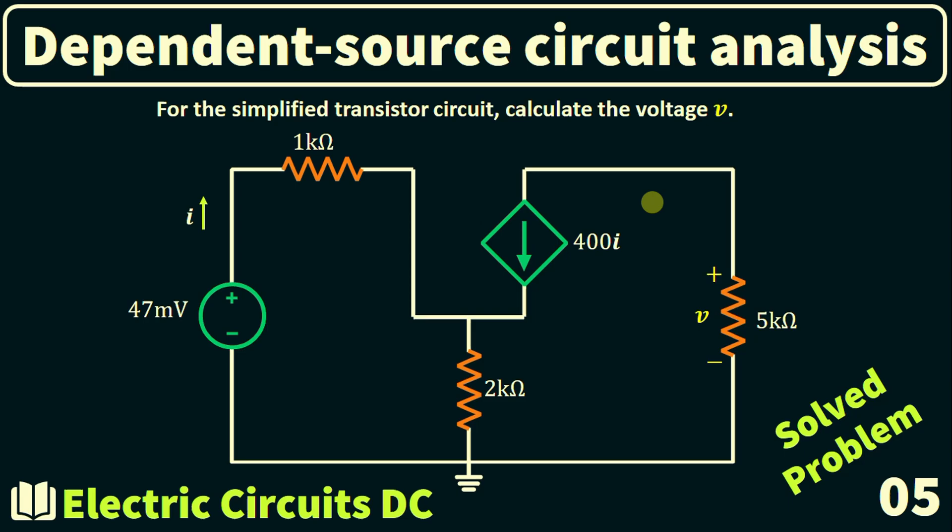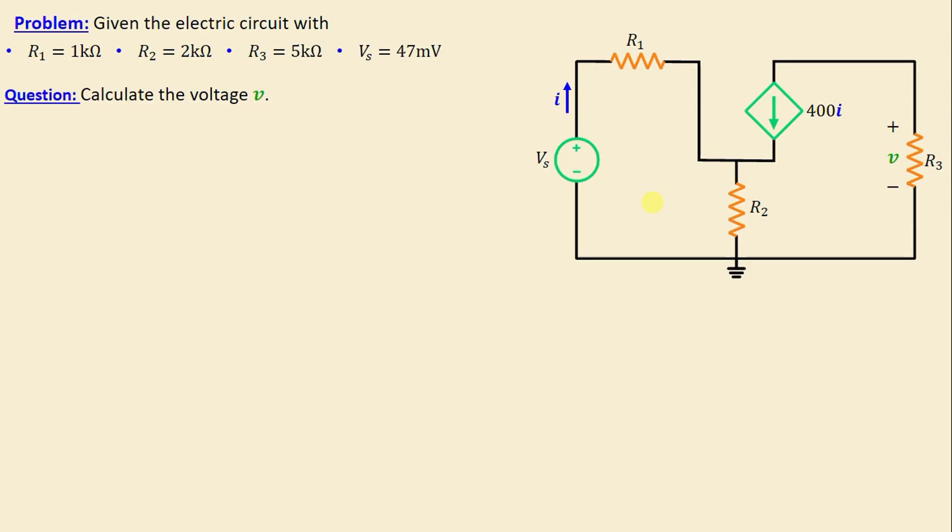Greetings, welcome to this new video about dependent source circuits analysis. Let's solve problem number five. Consider this network that presents a simplified transistor circuit consisting of three resistors labeled R1 through R3, along with one independent voltage source Vs.